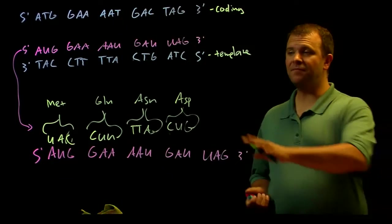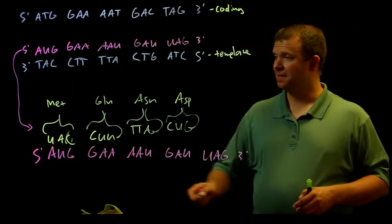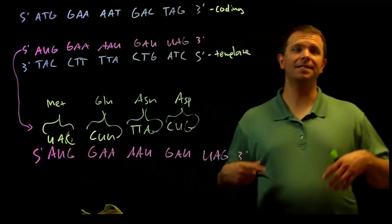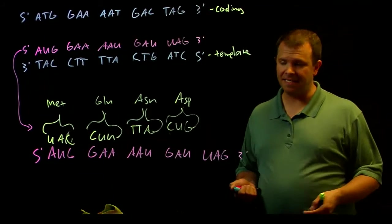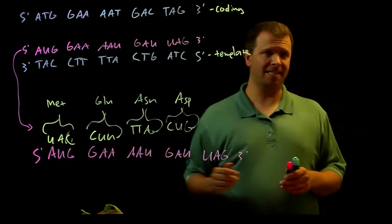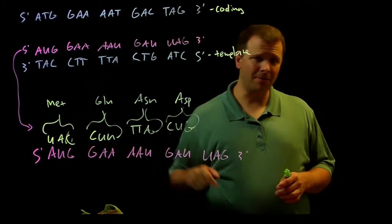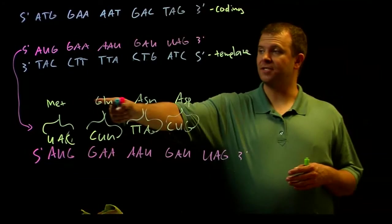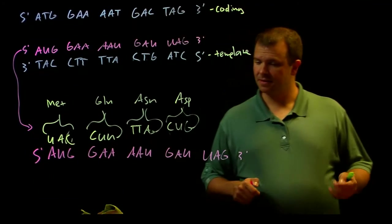So a couple of things to note about this. First, the start codon is almost always an A-U-G. For all intents and purposes, at least in this course, it is always an A-U-G, which means that the amino acid that starts the protein is always a methionine.